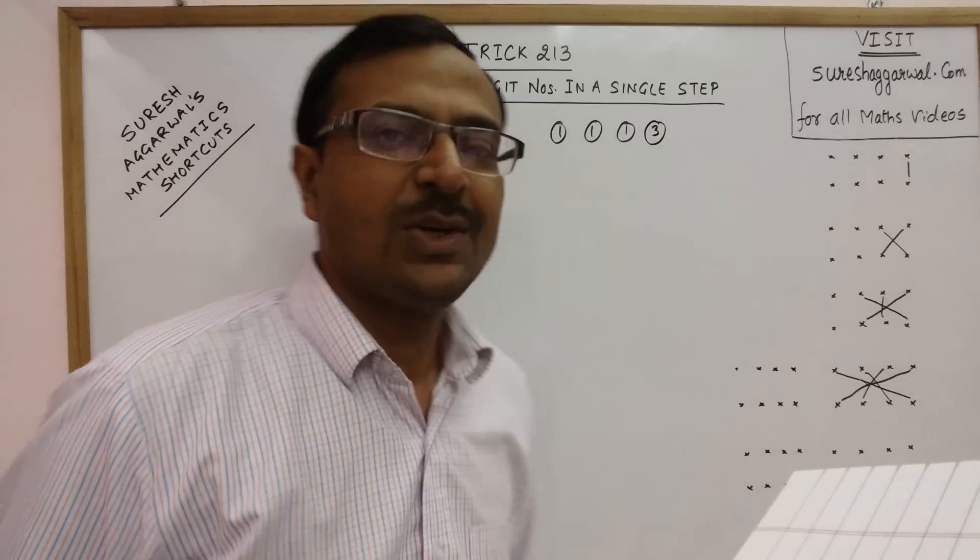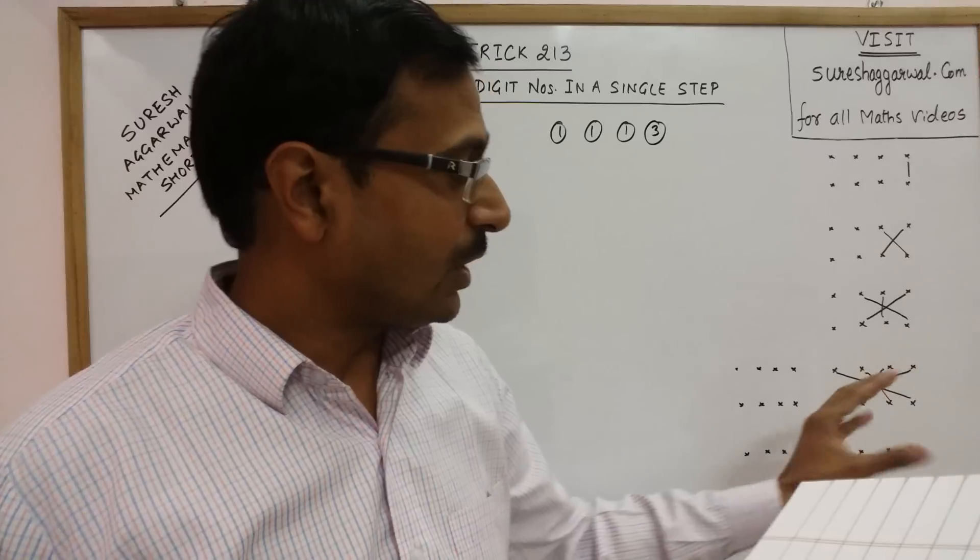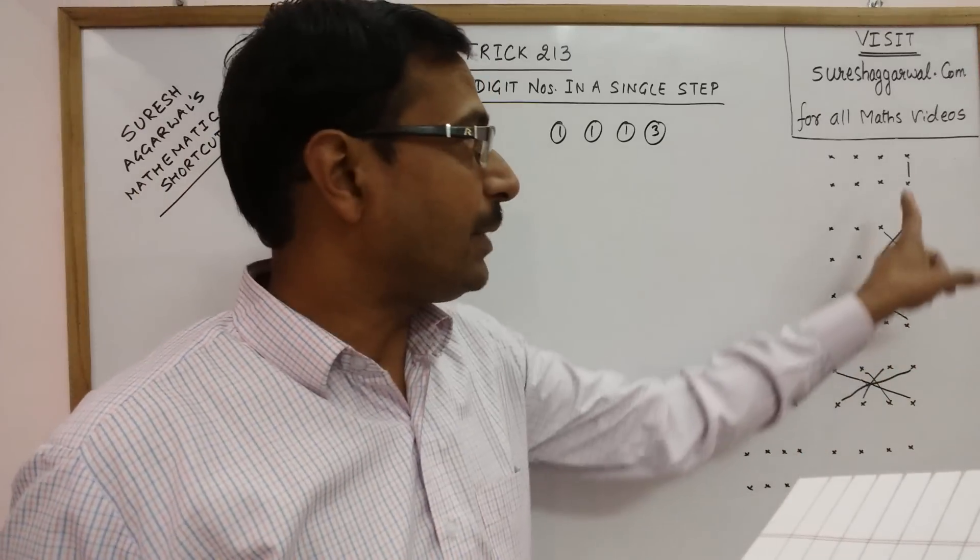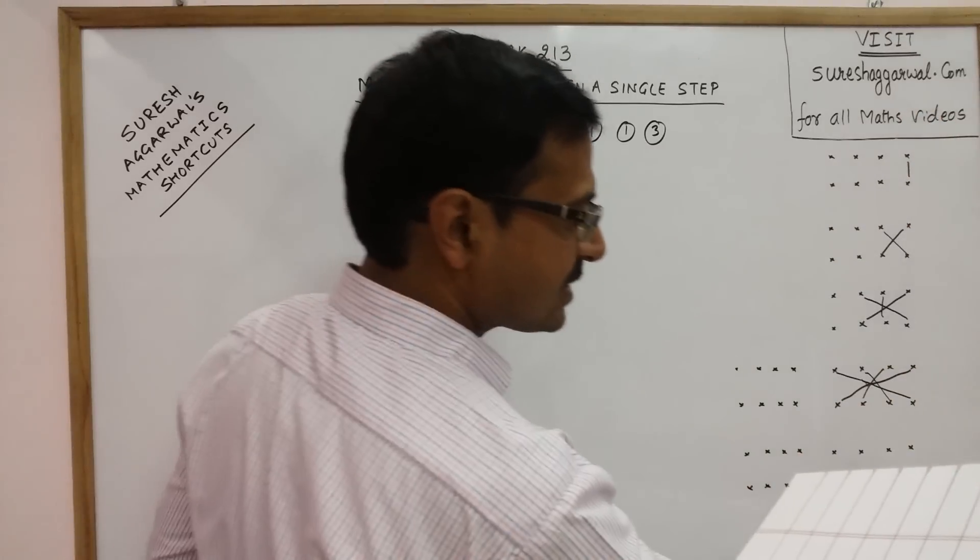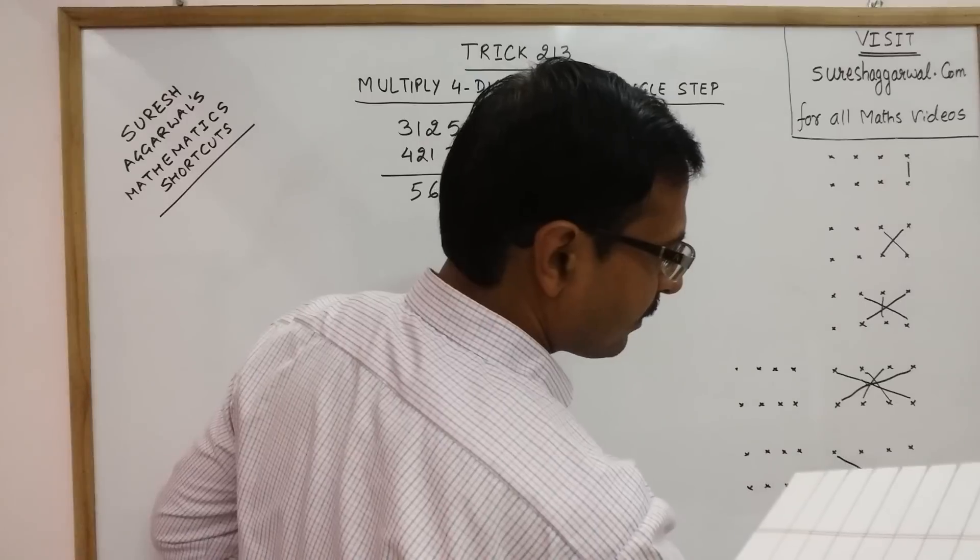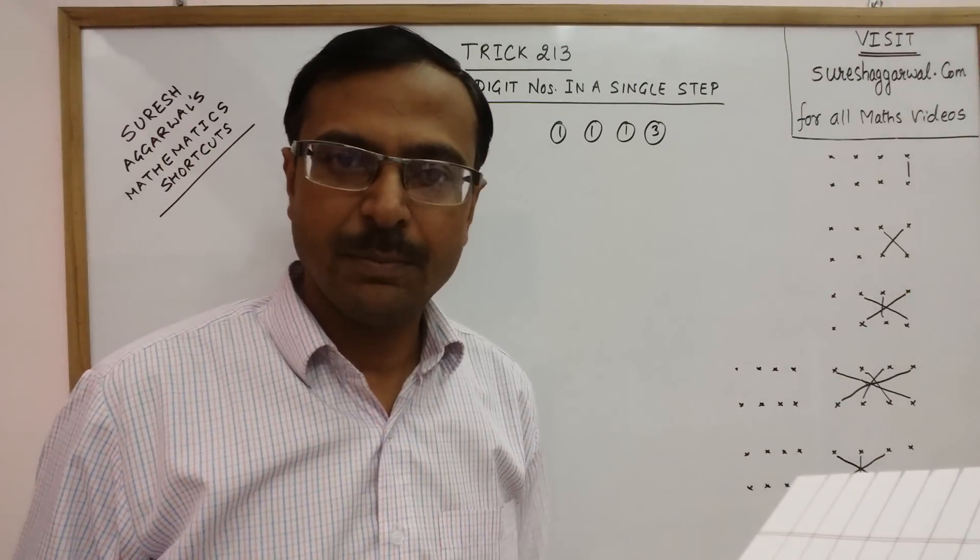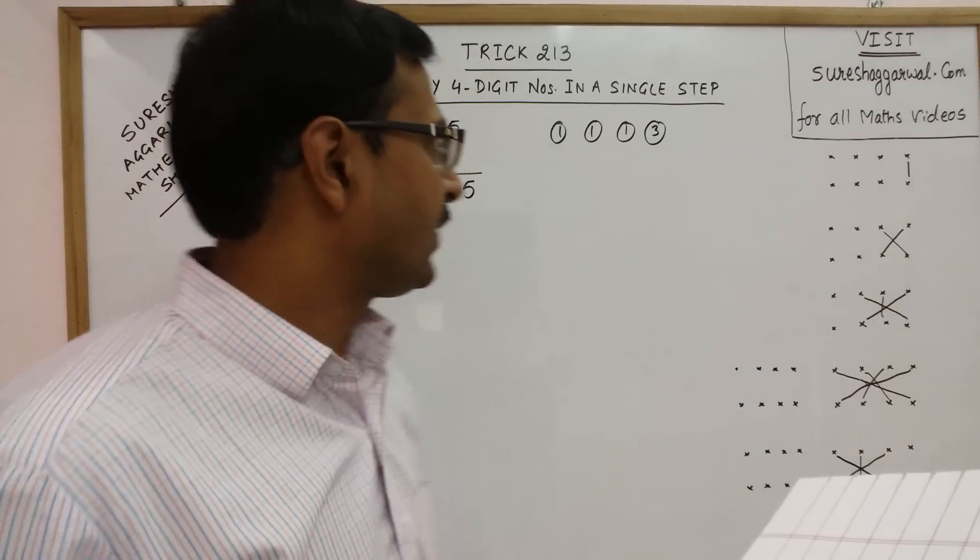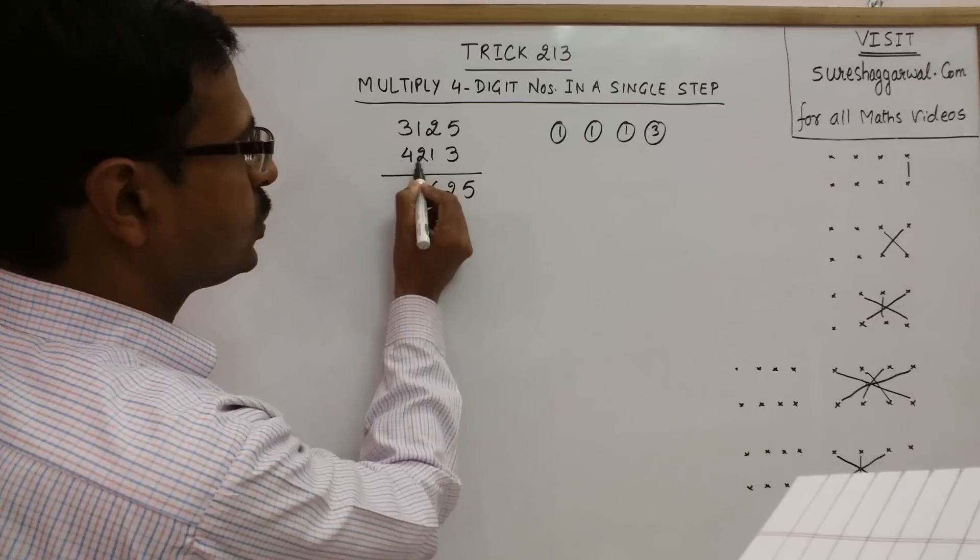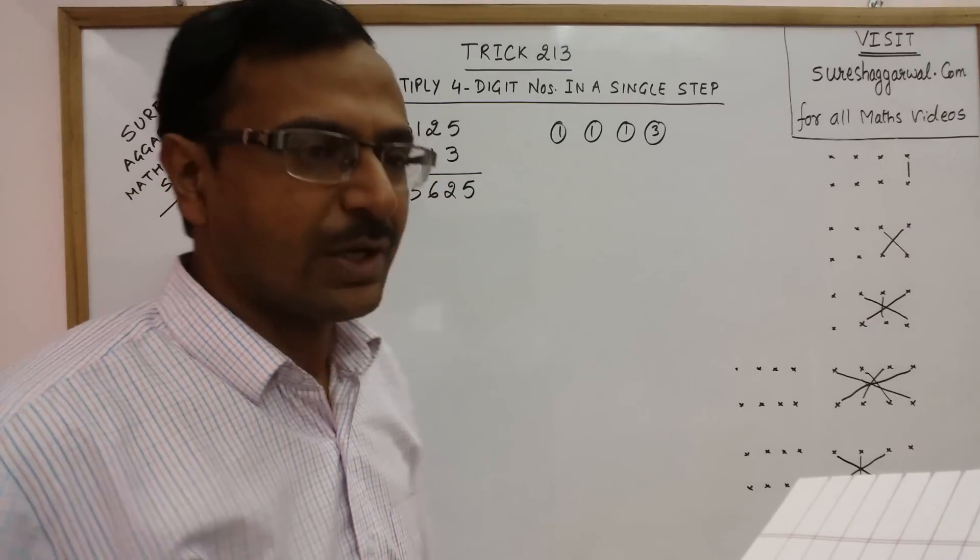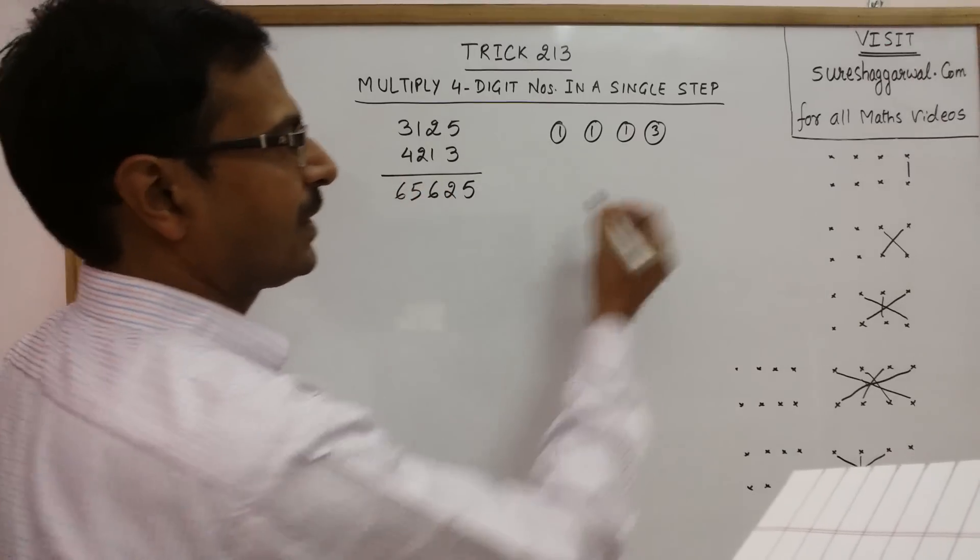Once we have involved all the 4 pairs, now we start leaving the pair with which we started. We will leave 1 pair from the units place, so we have 3 pairs left here. Just cross multiply now like this. This is the next step, we are leaving behind this pair which we started with. Now you see 8 plus 3, 11 plus 2, 13. 13 and we have 3 carry also, so 16. 6 and 1 carry now.